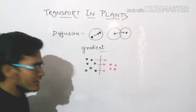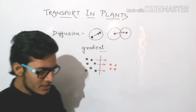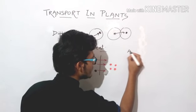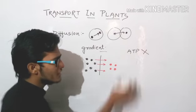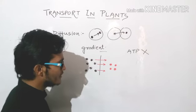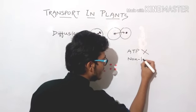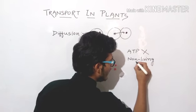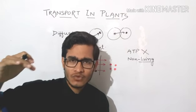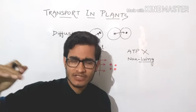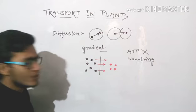Diffusion takes place from high concentration to lower concentration. It does not require energy — it does not require ATP. Therefore we can call it a passive transport. It is not dependent on a living system, therefore we can also call it a non-living transport. If you have a gradient of pressure as well as concentration, you will see diffusion.